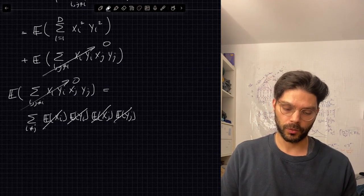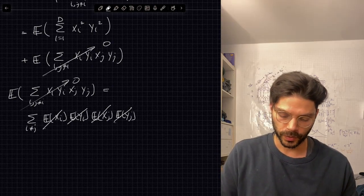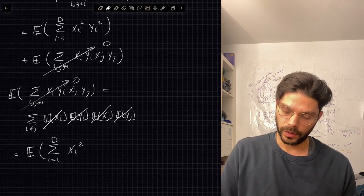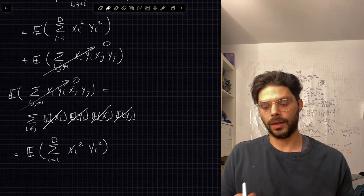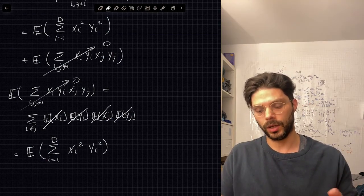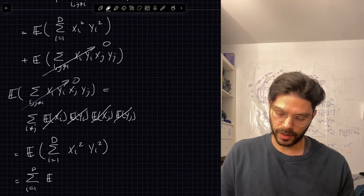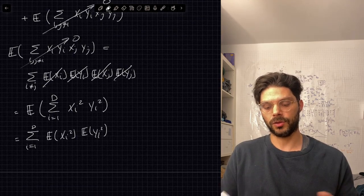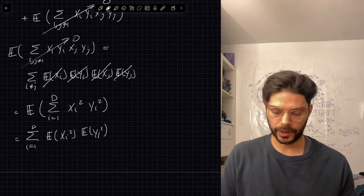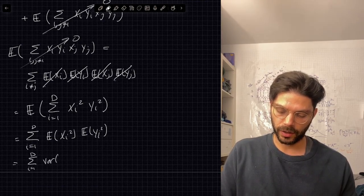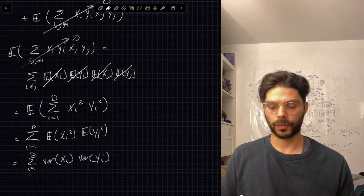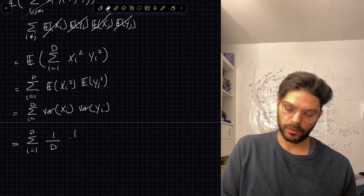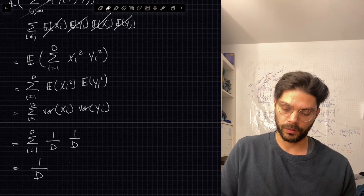So we just have the terms where i equals j, giving xi squared times yi squared. Since x and y are independent, we can distribute the expectation: E[xi²] times E[yi²]. Since the means of xi and yi are zero, these expectations equal the variances, which are both 1/d. So we get the sum from i=1 to d of (1/d)(1/d), which is d times 1/d², equaling 1/d.